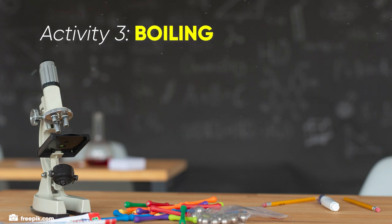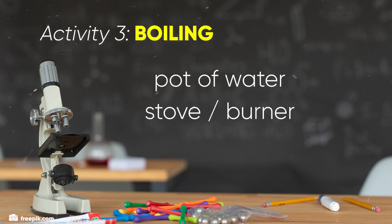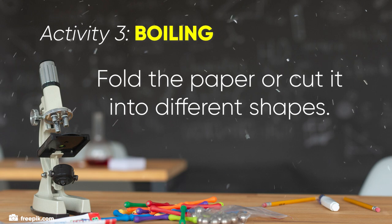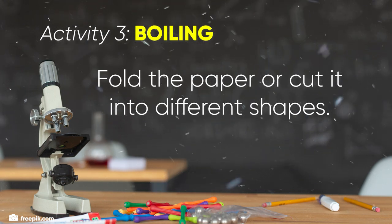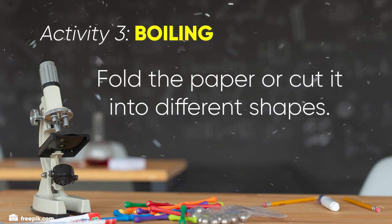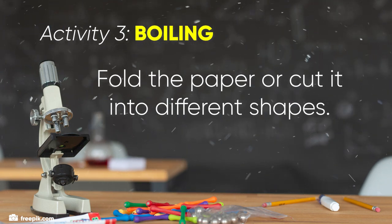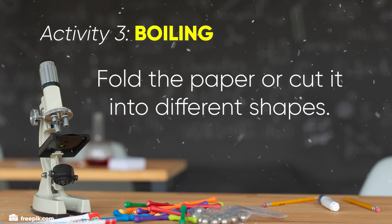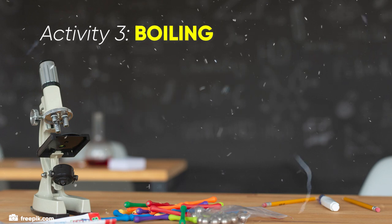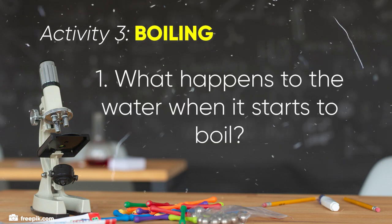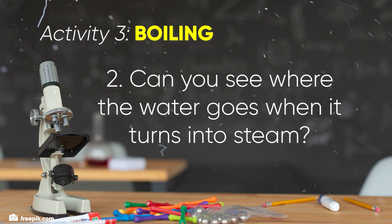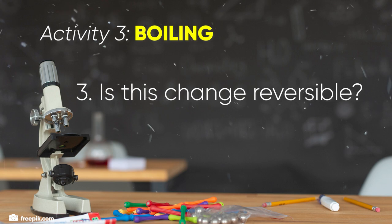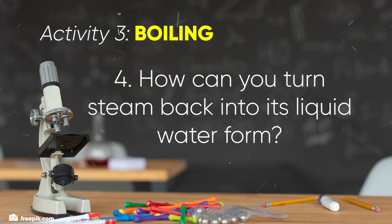Activity 3: Boiling Water and Observing Steam. What you'll need: a pot of water and a stove, with adult supervision if needed. Heat the water in the pot until it starts boiling and releasing steam, and observe the change from liquid to gas or steam. Questions to ponder: What happens to the water when it starts to boil? Can you see where the water goes when it turns into steam? Is this change reversible, and how could you turn steam back into water?